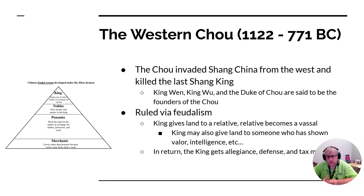The biggest difference between European and Chinese feudalism is where the merchants are. In European feudalism, merchants come under the nobles, but in Chinese feudalism, peasants come under the nobles and merchants are at the very bottom.